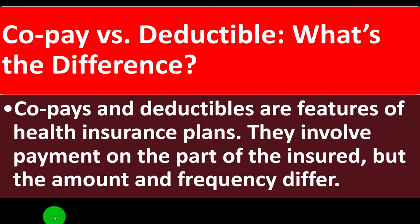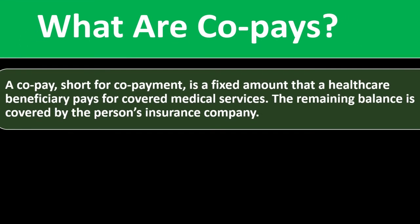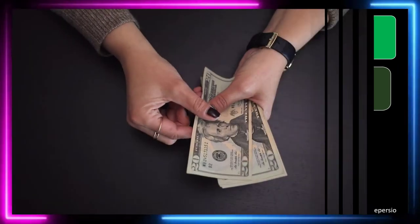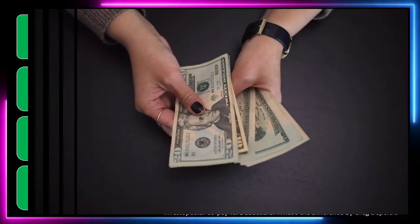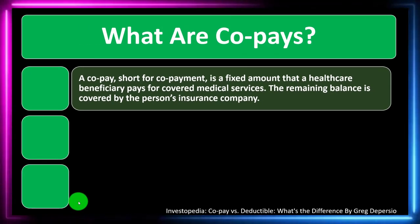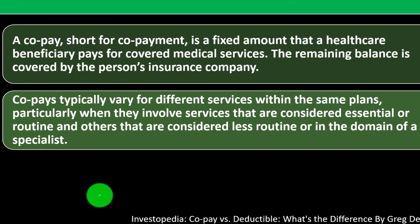Co-pays and deductibles are features of health insurance plans. They involve payment on the part of the insured, but the amount and frequency differ. A co-pay is short for co-payment — a fixed amount that a healthcare beneficiary pays for covered medical services. Co-pays are those fixed dollar amounts you will be paying, which can help you plan and budget. The remaining balance is covered by the insurance company.